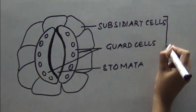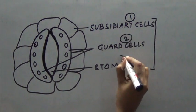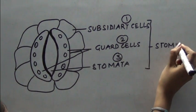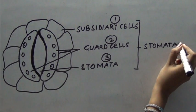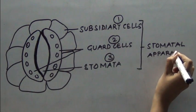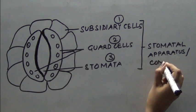Together these three cells, that is subsidiary cells, guard cells and stomata, they form the stomatal apparatus or the stomatal complex as we call it.